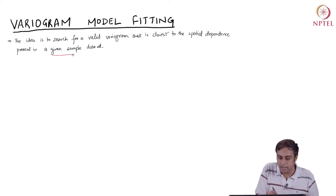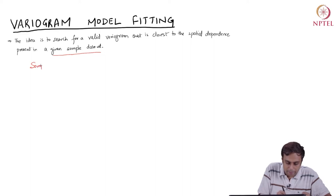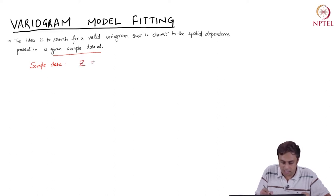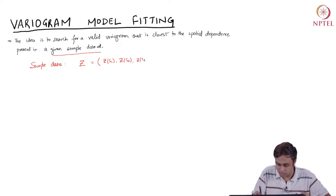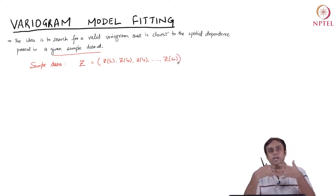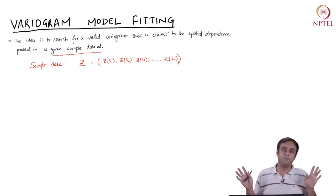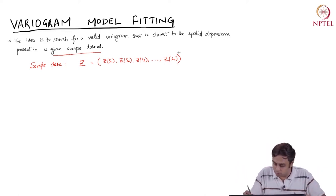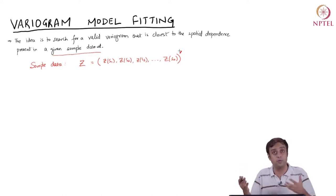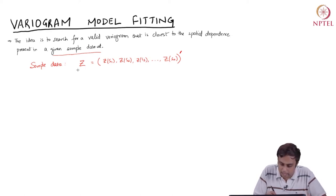We start with a given sample data set. We represent our sample data as a vector z, which is equal to z at location S1, z at location S2, z at location S3, all the way to z at location Sn, where S1 through Sn are the spatial entities at which I have sampled the data. Everywhere else I have not sampled. This vector contains all these values in a row vector transposed, meaning z itself is a column vector.